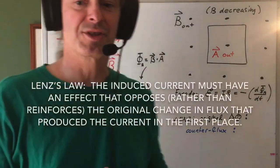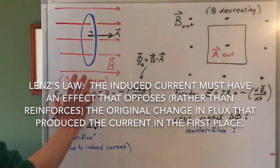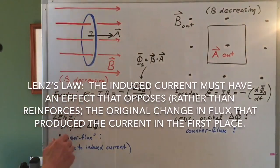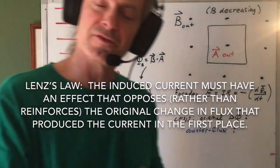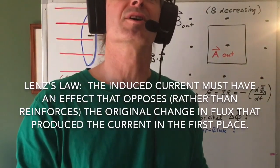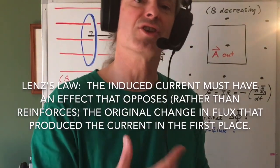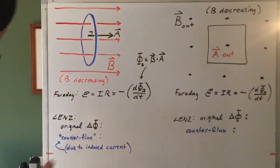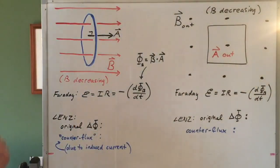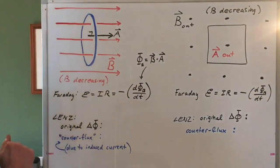Lenz's law, remember, states that the induced voltage and current produced by a changing flux must oppose, in some sense, the change in flux that produced the current in the first place. So let's go over this in two examples.